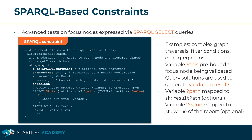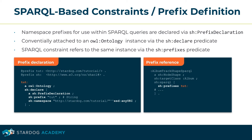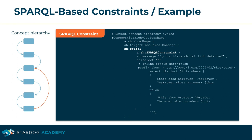Namespace prefixes referenced within the SPARQL queries are declared by an instance of the PrefixDeclaration class. This is often attached to an ontology instance via the 'declare' predicate. The SPARQL-based constraint refers to the same instance via the 'prefixes' predicate. This SPARQL-based constraint detects cycles in concept hierarchies — whenever a focus node transitively refers to itself via the SKOS:narrower or SKOS:broader predicates.